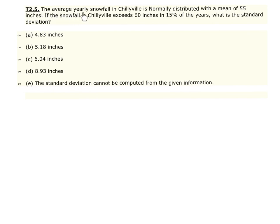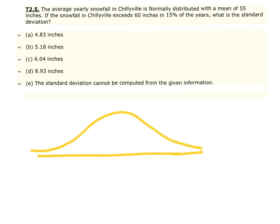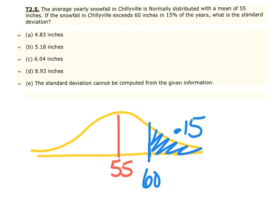Number 5: The average yearly snowfall in Chileville is normally distributed with a mean of 55 inches. If the snowfall exceeds 60 inches in 15% of the years, what is the standard deviation? First, sketch the standard normal curve. The mean is 55, and 60 inches sits to the right. Since it exceeds 60 in 15% of years, the area to the right of 60 is 0.15, meaning the area to the left is 0.85. We can use inverse norm to find the z-score at 60 inches.